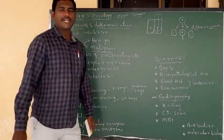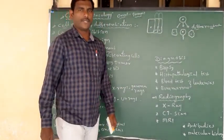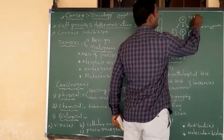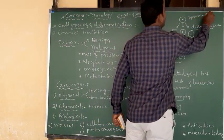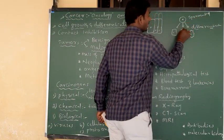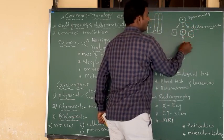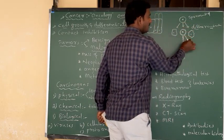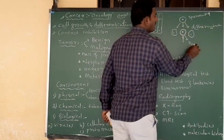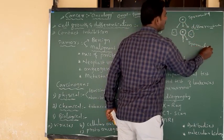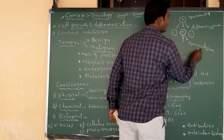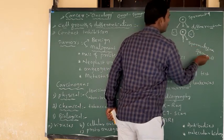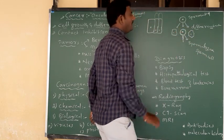We already completed a type of differentiation in spermatogenesis. In case of spermatogenesis, the spermatid changes its structure, and once the spermatid changes its structure, that cell is termed as a sperm cell. This is also a type of differentiation.